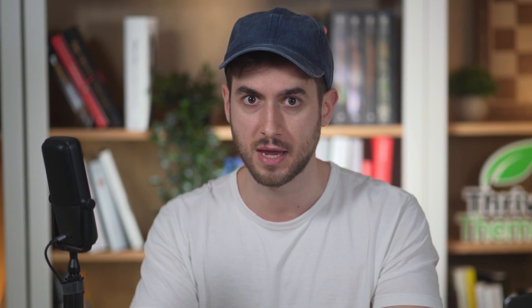In CSS, there are five primary ways of positioning an element on a page. An element can be set to have a static position, a relative position, an absolute position, a sticky position, or a fixed position. I'd like for us to concentrate on relative and absolute positions in this video, but in order to understand these, I think it's important that we also understand static positions as well.